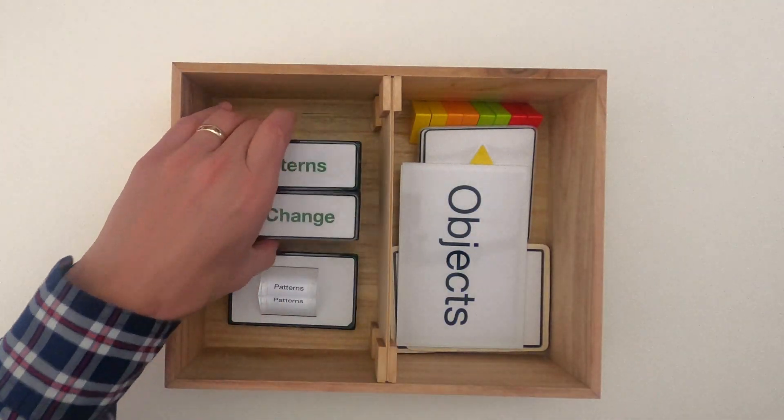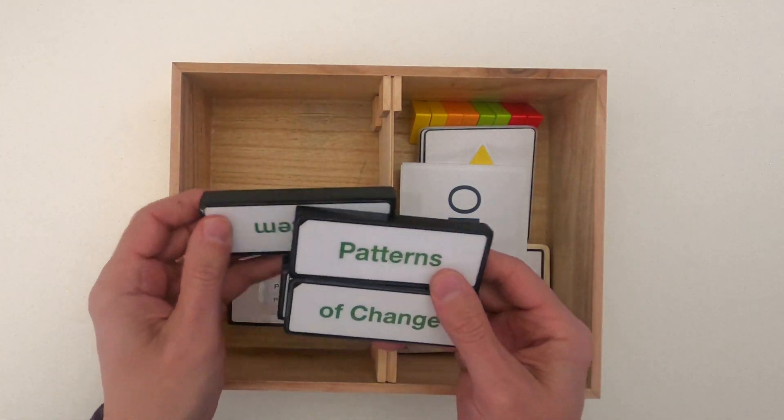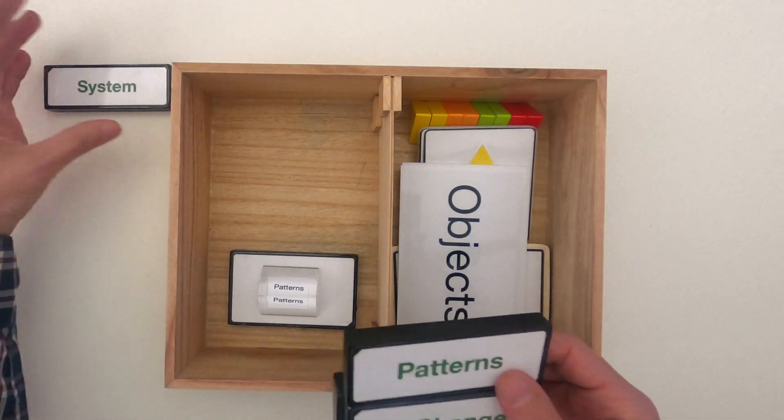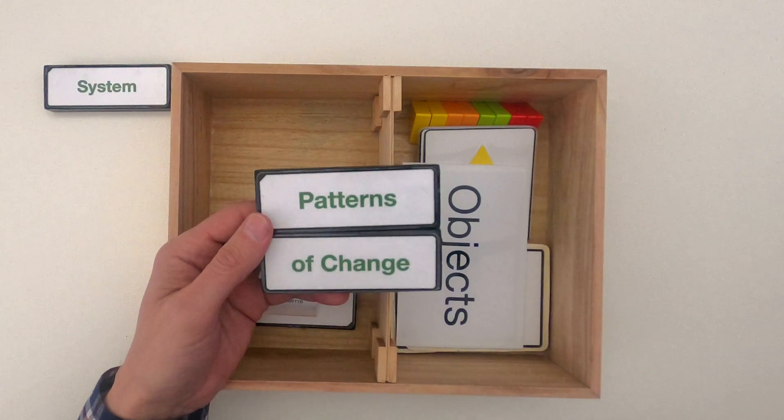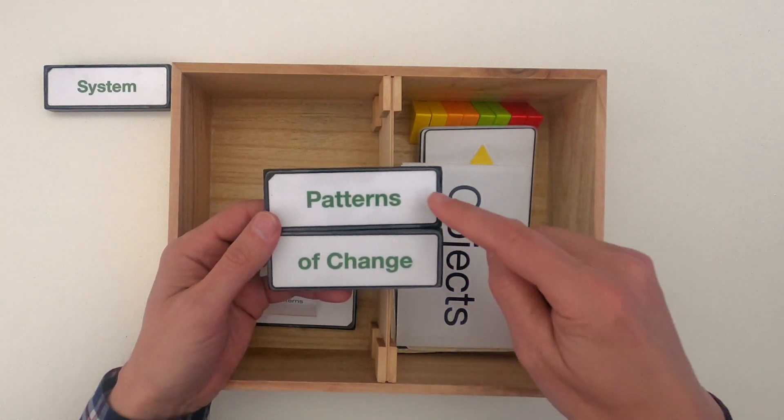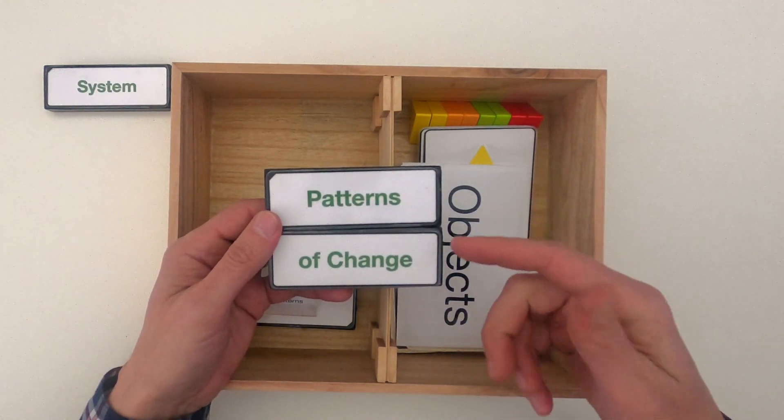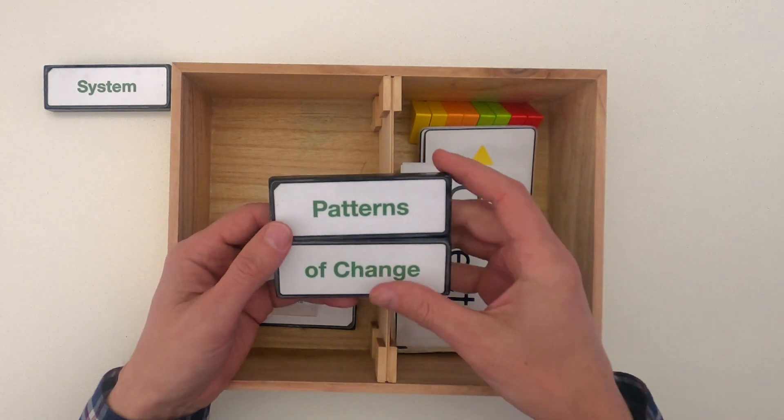When you're looking at patterns, the first thing you should always do is define the system that you're going to investigate. And when it comes to patterns, you should also talk about what type of pattern. So in this video, we're going to be talking about patterns of change, so how things change from one form into another.